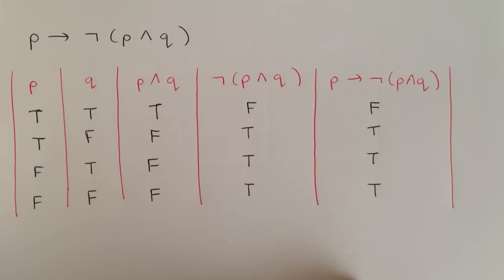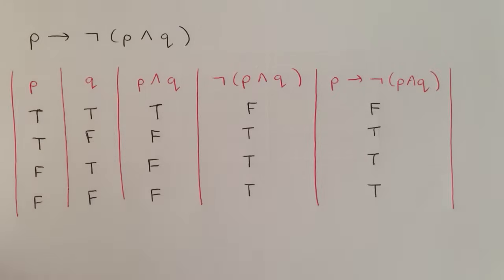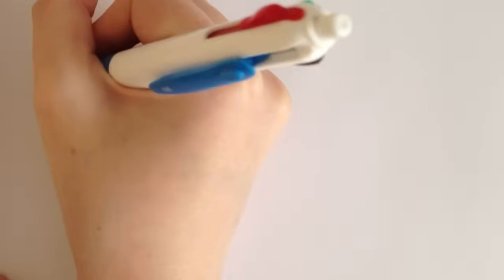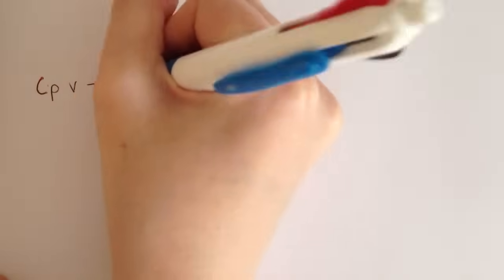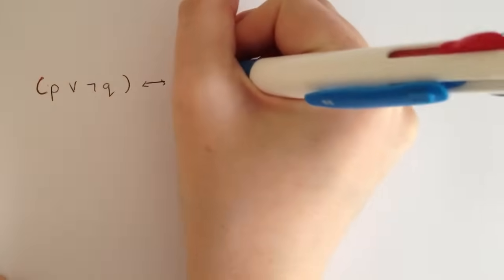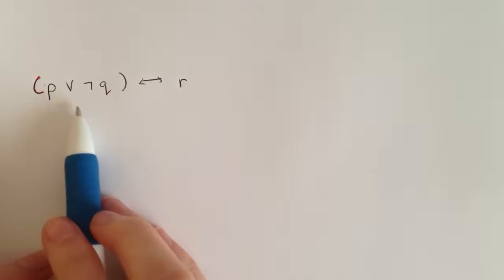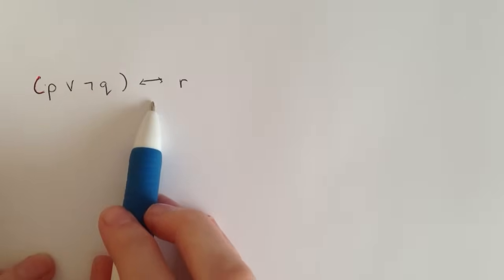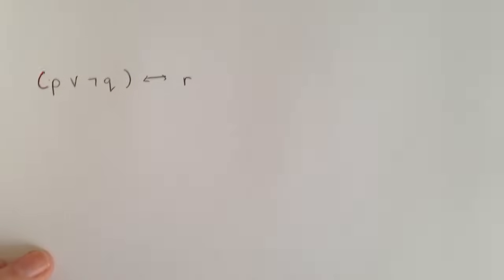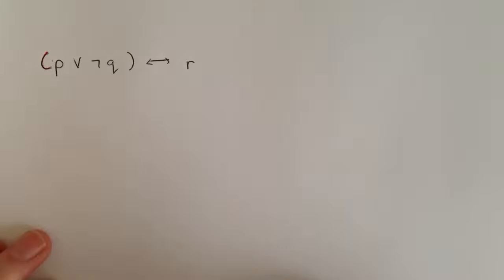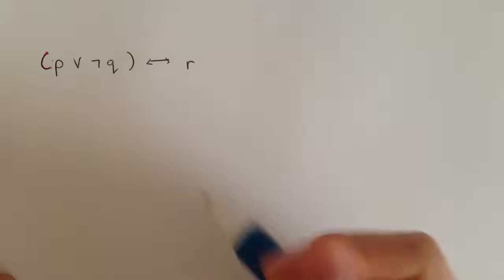So that is our completed truth table for that example. Now we'll head on to another example: p or not q, if and only if r.